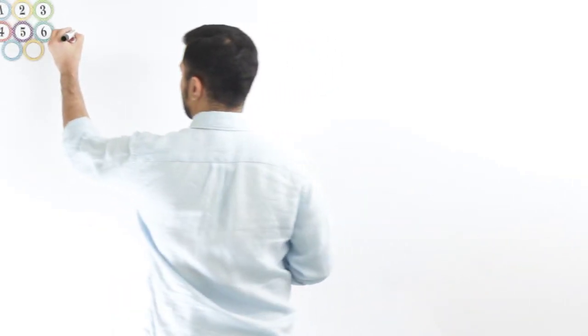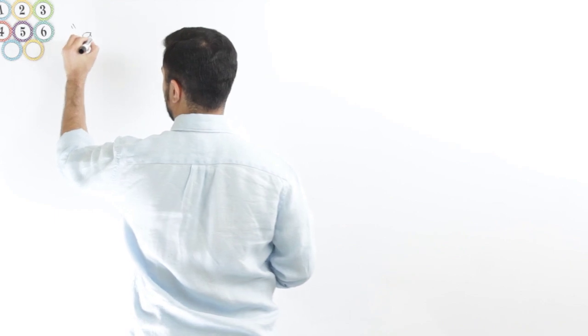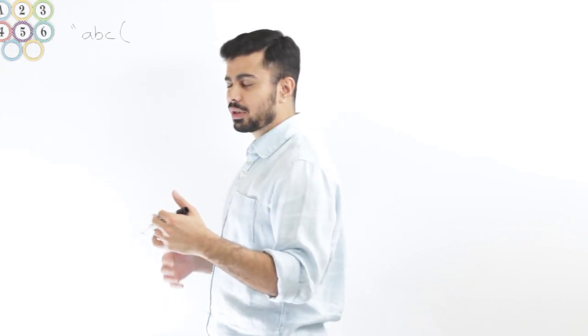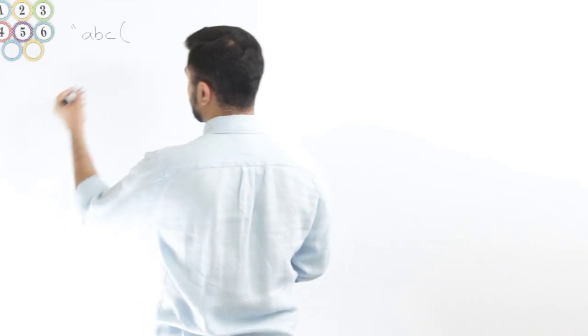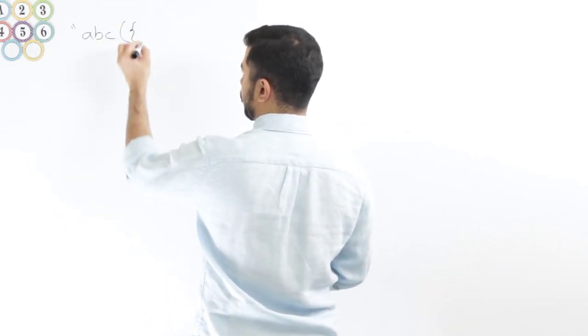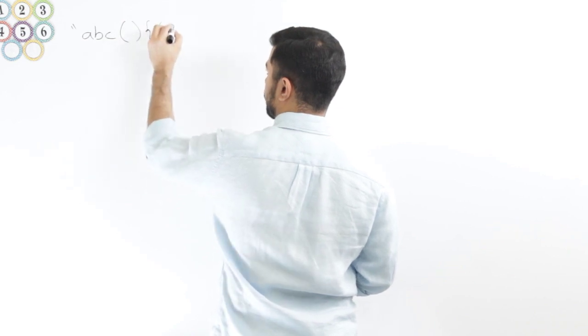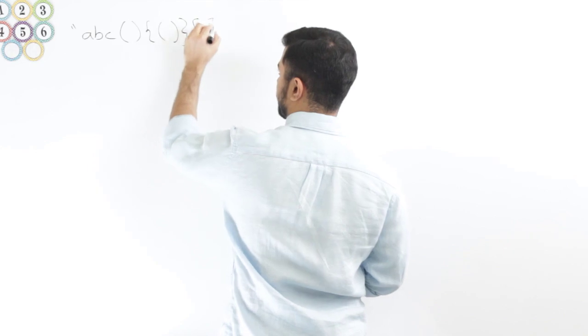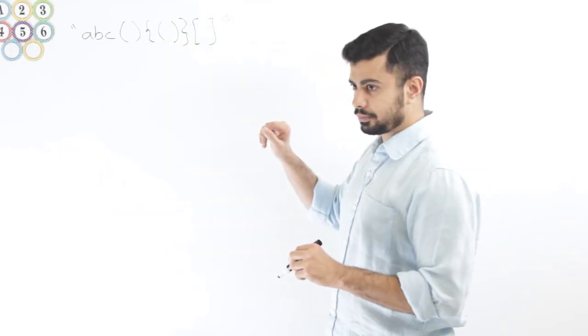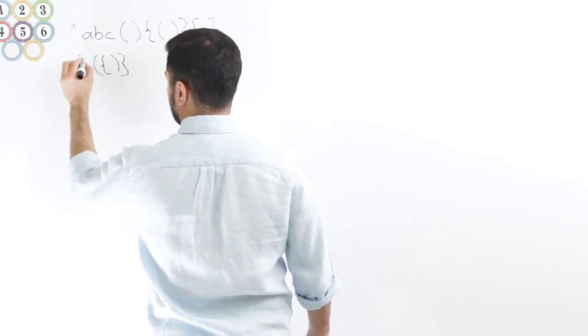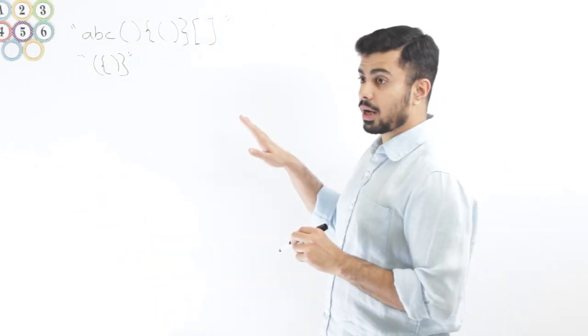Let me start with an example. Let's say I have a string that looks something like this — 'abc' and then some parentheses. We're dealing with three types: regular parentheses, curly braces, and square brackets. So I have a string starting with 'abc', then closed curlies, open regulars, open curlies, closed — something like this. This is a valid one. If it wasn't valid it would look something like this instead.